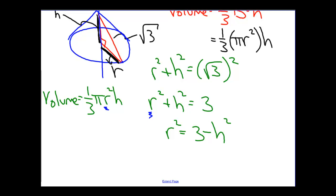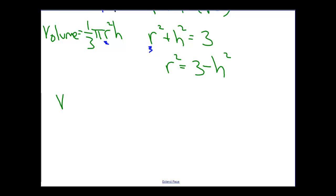We would have a square root in our expression, and that would make our problem quite a bit more difficult. So if we combine these two relationships together, we find that the relationship for volume is one third pi times 3 minus H squared times H. This is the volume of our right circular cone expressed only in terms of one variable.